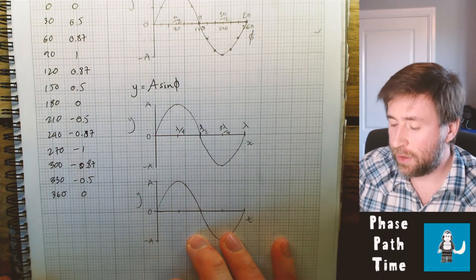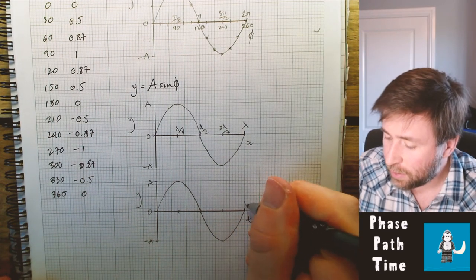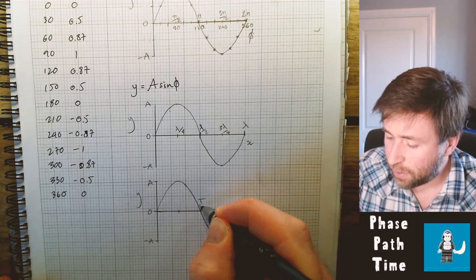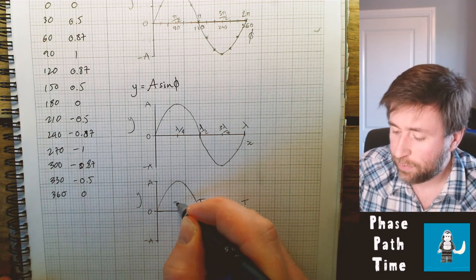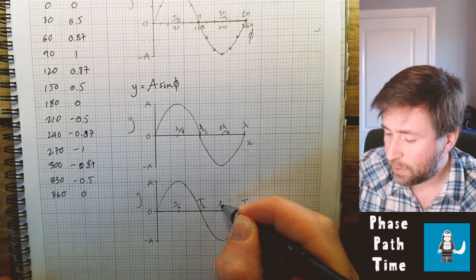And similarly down here, this value here of T is the time period. So this value is half the time period. This value is a quarter the time period. And this value is three quarters the time period.